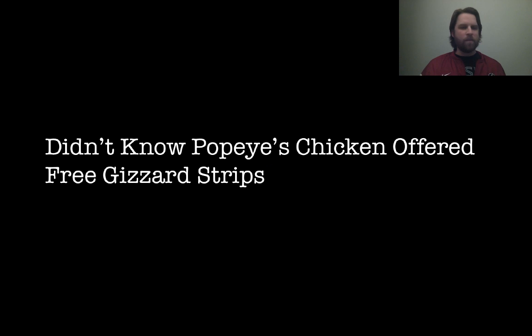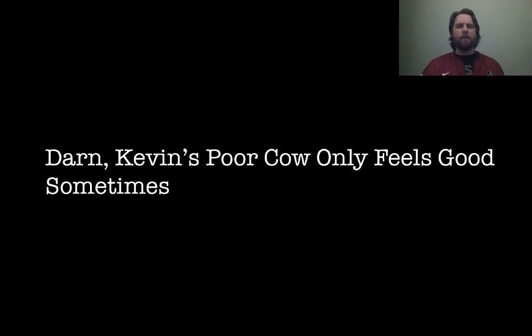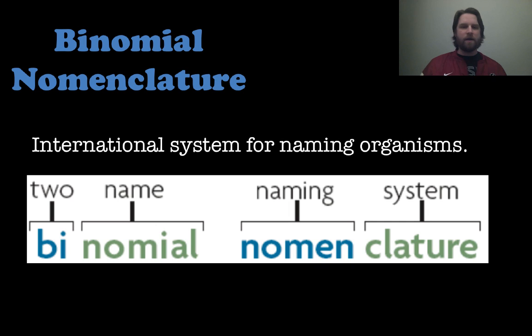Here are some fun ones that may help you remember a little bit more: 'Didn't know Popeye's chicken offered free gizzard strips.' 'Do kangaroos prefer cake or frosting, generally speaking?' Or: 'Darn, Kevin's poor cow only feels good sometimes.' And one of my favorites: 'Dumb kids playing cards on freeways get smashed.' Domain, kingdom, phylum, class, order, family, genus, species. Great way to remember it — use a mnemonic.